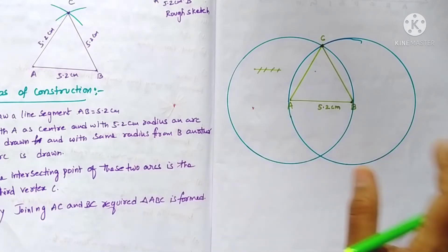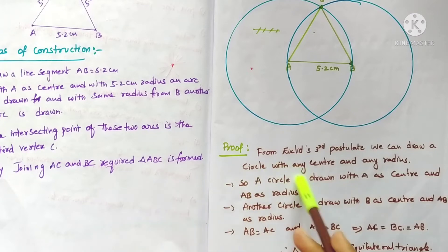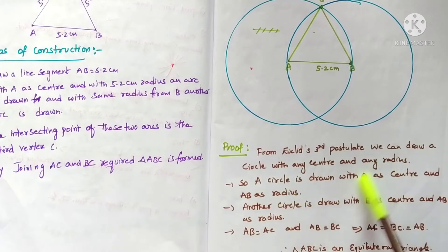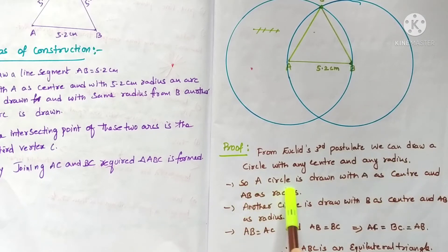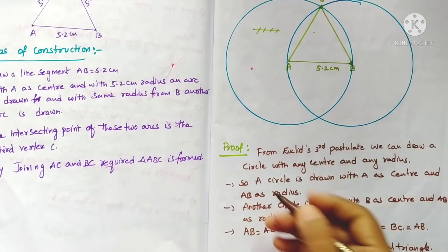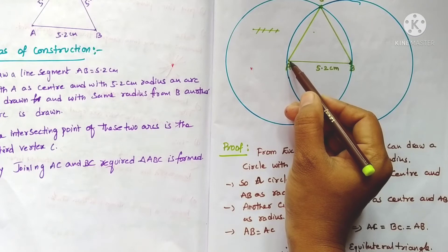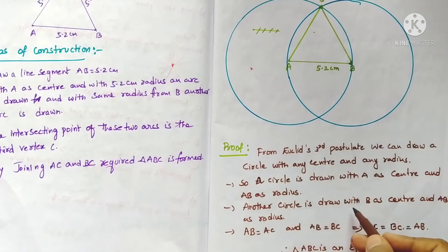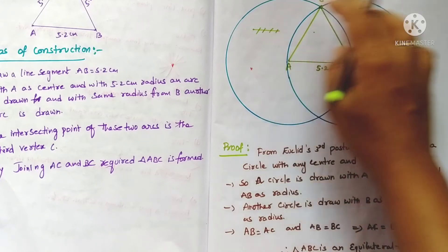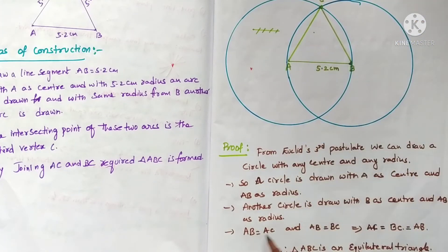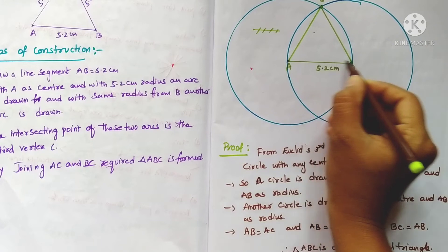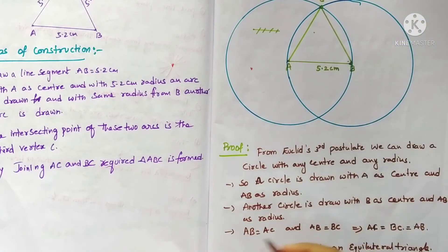Now for the proof — from Euclid's third postulate, we can draw a circle with any center and any radius. So we drew a circle with A as center and AB as radius. Now, AB is equal to AC, because A is the center and both AB and AC are radii of that circle.